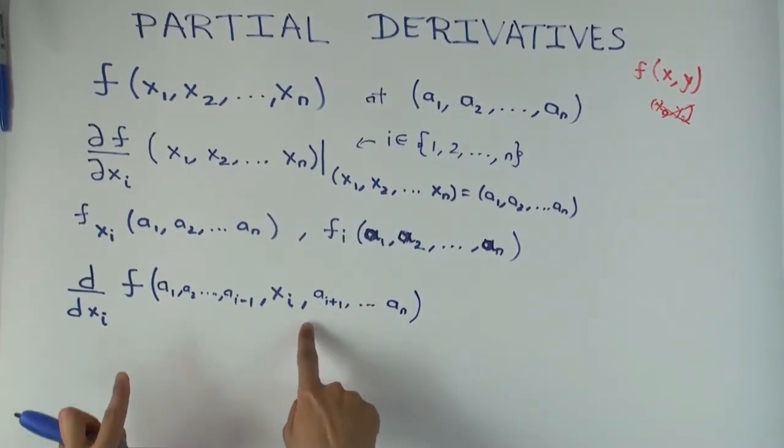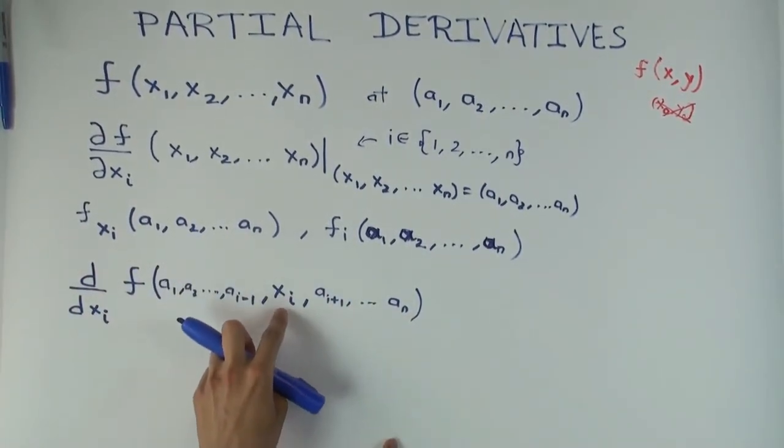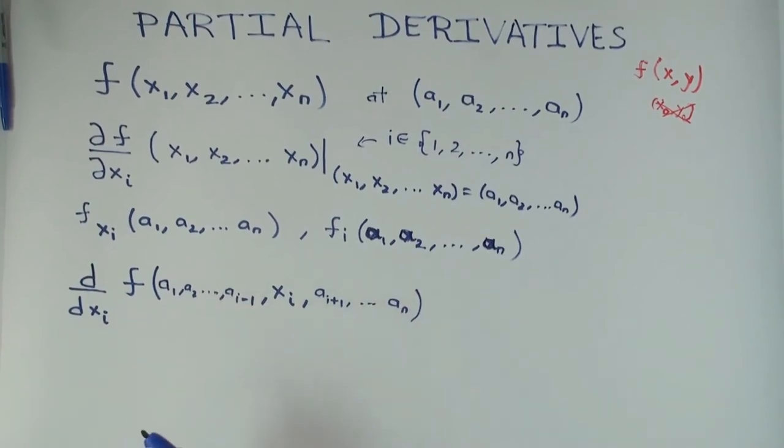And on the right. So now this is a function, this thing is a function of how many variables? One. Just this one. Because all the others are now fixed.